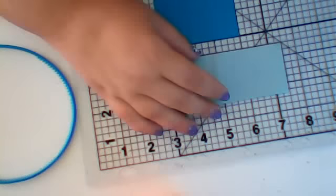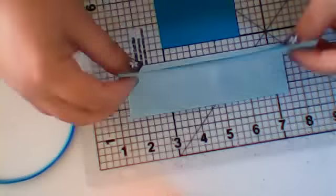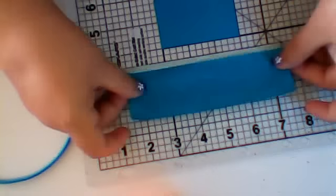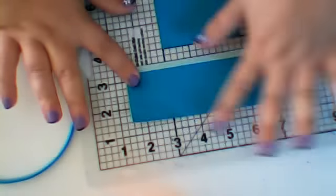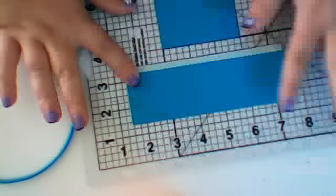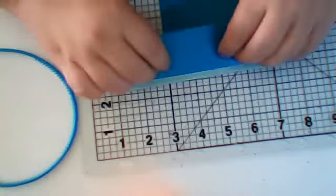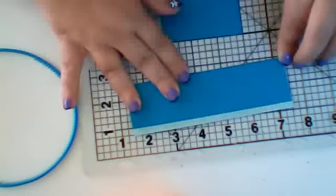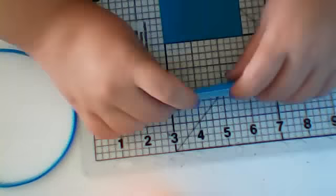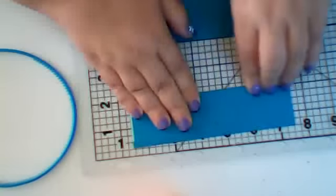So you're going to line it up with one of your lines, and leave a quarter of an inch for the sticky part. Press it down. Push the sticky side down onto it. There's what you've got.